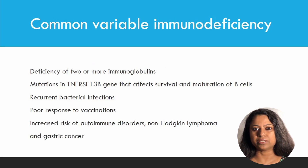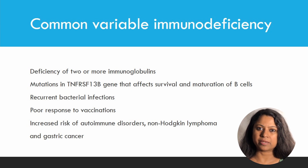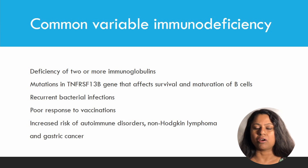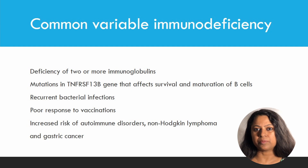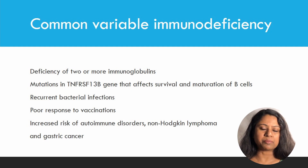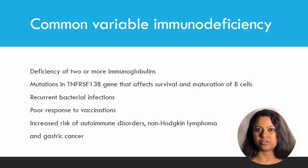Common variable immunodeficiency is characterized by the deficiency of at least two types of immunoglobulin in the plasma — for example, deficiency of IgA and IgG, or deficiency of IgM and IgA. Clinically, it presents with recurrent pyogenic infections. Some people are at increased risk of autoimmune disorders and certain malignancies like lymphomas and gastric carcinomas.